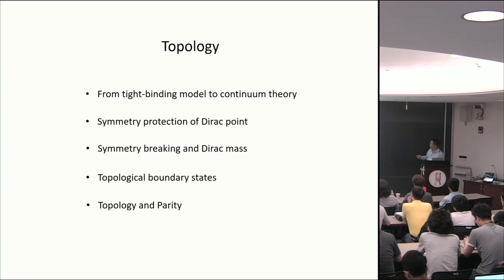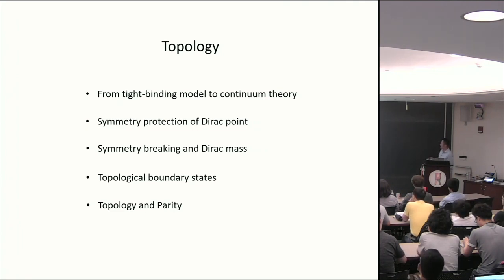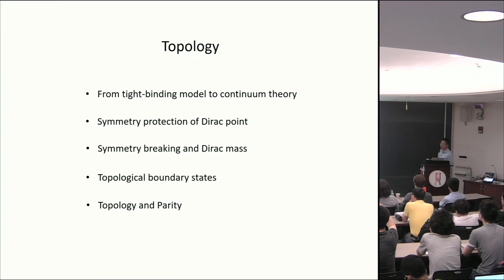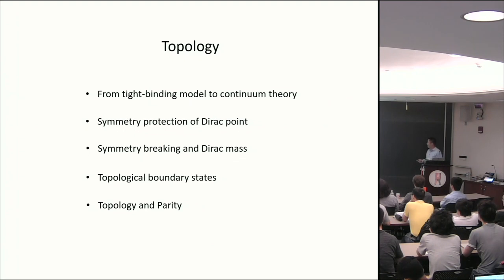This is an outline of the first lecture. I'm going to start with tight-binding models of graphene and show how the Dirac fermion arises in the continuum limit. I'll spend some time discussing the symmetry protection of these Dirac points — what makes graphene gapless. Then I'll talk about various ways of breaking the symmetry and introducing the Dirac mass, which leads to gapped states, many of them topological with interesting topological boundary states. I'll also discuss how topology can be inferred by parity of the electron wave function.